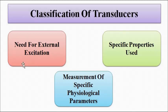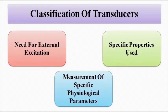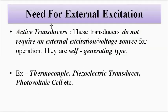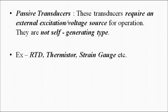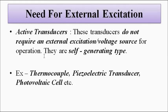On the basis of the need for external excitation — whether they require an external power source or whether they are self-generating — transducers can be classified into two types: active and passive. Active transducers do not require an external power source for their operation. They are self-generating, meaning they generate their own output voltage or potential.